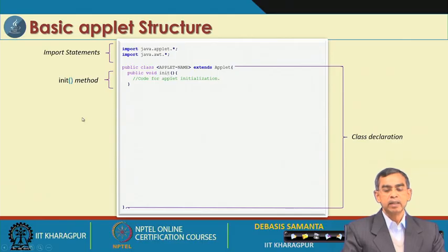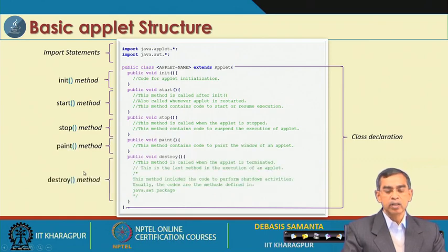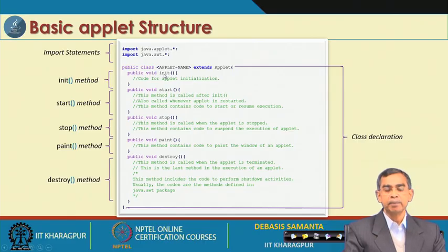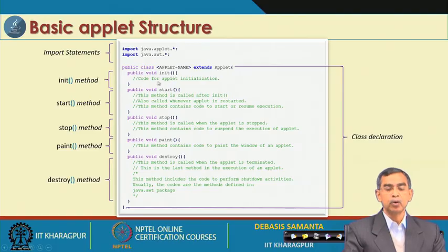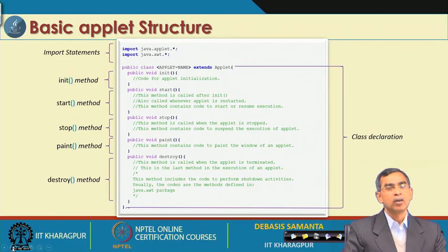There are five standard methods that usually appear when a programmer designs an applet: init, start, stop, paint, and destroy. These are abstract methods defined in the Applet class, so we must override them in our program. However, all these methods are optional — you can use them if you need them. It is not necessary to implement all five; you only implement what your program requires.